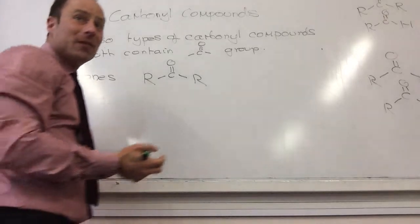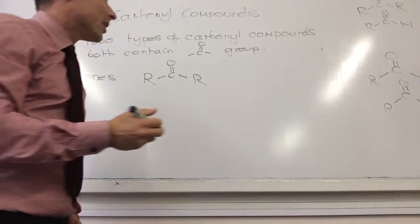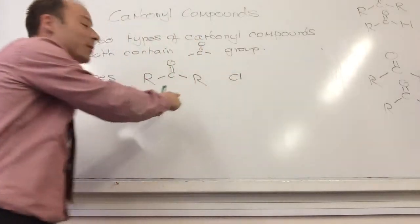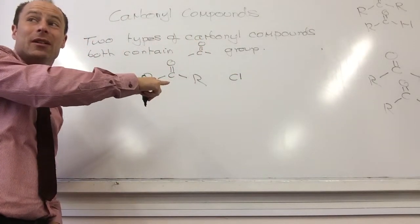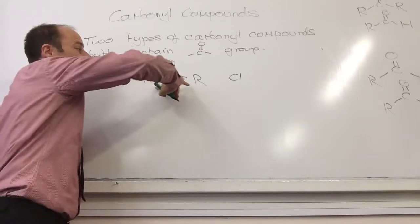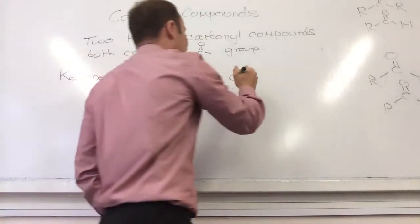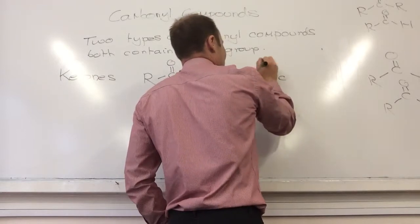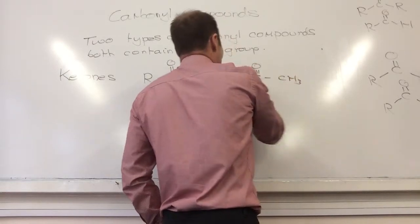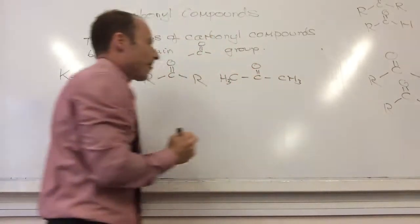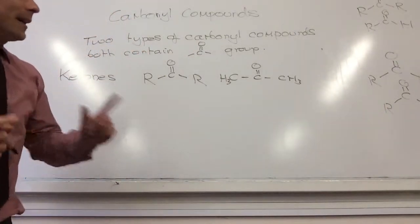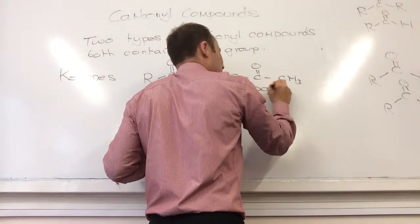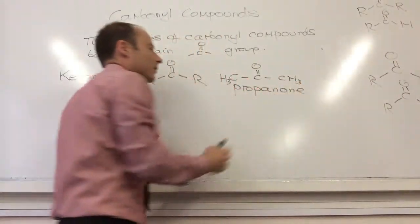An example of that - well, the simplest one - what do you reckon? How many carbons? What's the minimum number of carbons I must have? Three. So it's going to be carbon, carbon, carbon. What do you reckon this is going to be called? Propanone. Do I need a number to say where the O is? No, it's got to be on that middle one.